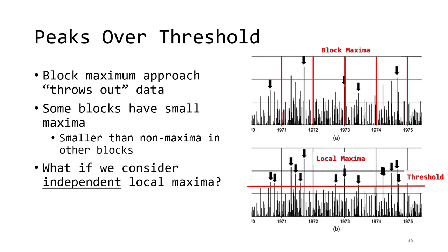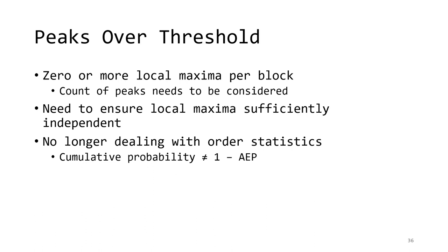Instead, what happens if we throw away the notion of blocks and only look at all of the large events in our record, where large is defined as exceeding some threshold that we define? What we would have to ensure is that each of these events is independent, which is a little more work than when we use block maxima, which we assume are independent by design. When we collect all of the events in our record exceeding a threshold — where there may be anywhere from zero to several per year — we call this approach the peaks over threshold approach.